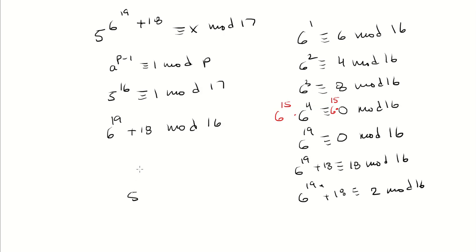So instead of 5 raised to the 6 to the 19th plus 18, I can just say 5 squared is congruent to x mod 17. 5 squared is 25.